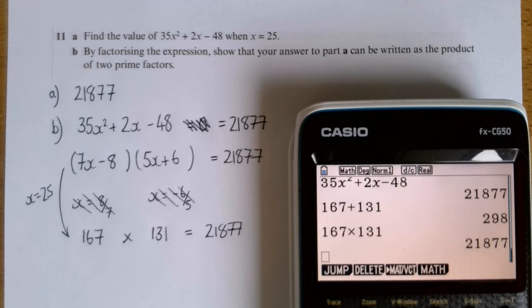So I factorised it using a bit of a cheat. And then I just made x equal to 25. And that gave me those two answers. It's quite a clever question, quite a tricky question. Hopefully you can see how I've done it.